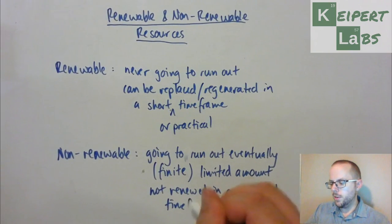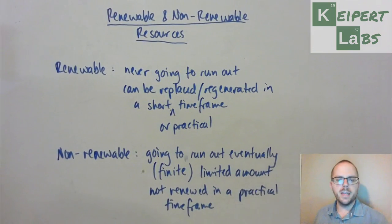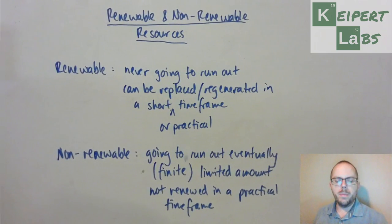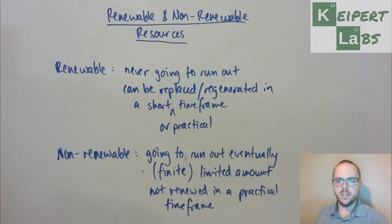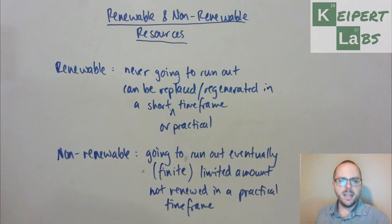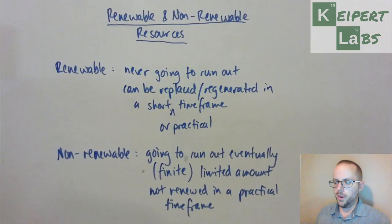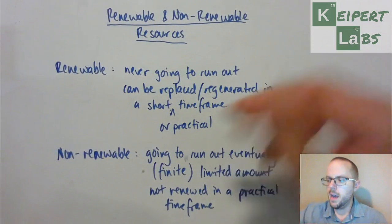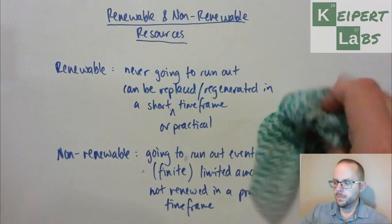Different substances like coal, for example, will form naturally over time, but they form over a very, very long period — thousands and thousands of years, millions of years. If we want more to get made, we can't sit around and wait that long. A substance like that we would consider to be non-renewable.